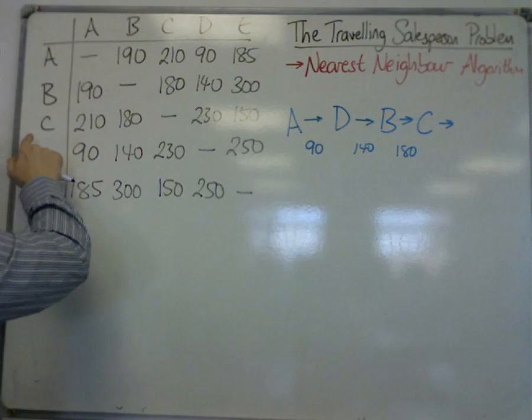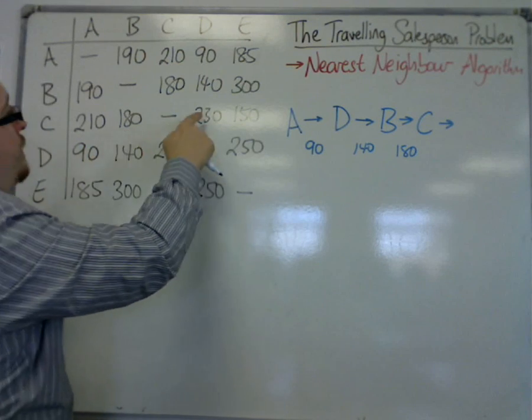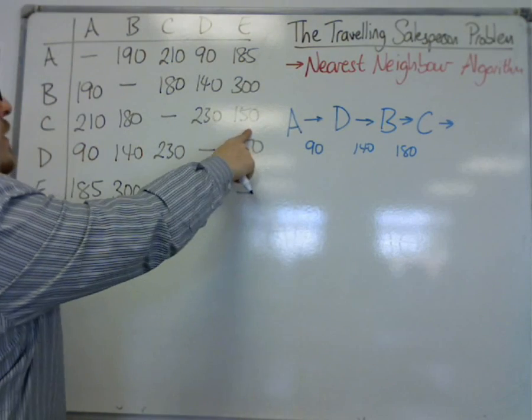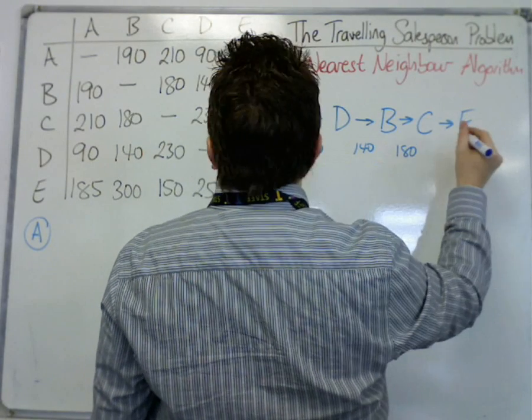Then from C, we've visited A, we've gone to B, we've already visited D, so we've got to go to E. So C to E for 150,